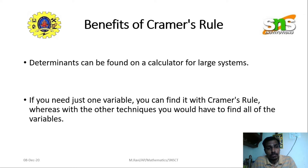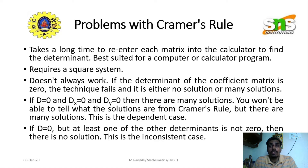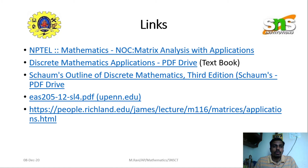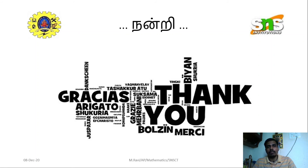Problems with Cramer's rule include that it takes a long time to re-enter each matrix into the calculator to find the determinant, so it is best suited for computer or calculator programs. It also requires a square system. These are the applications and usefulness of Cramer's rule. In the next case study, we will see advanced-level applications of matrices and determinants. Thank you.